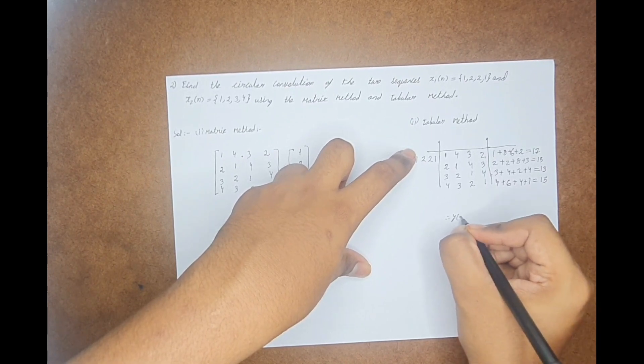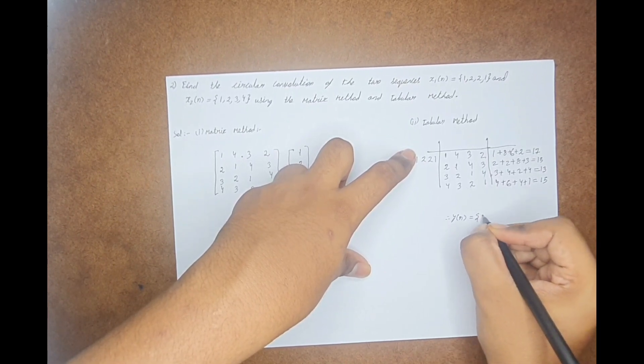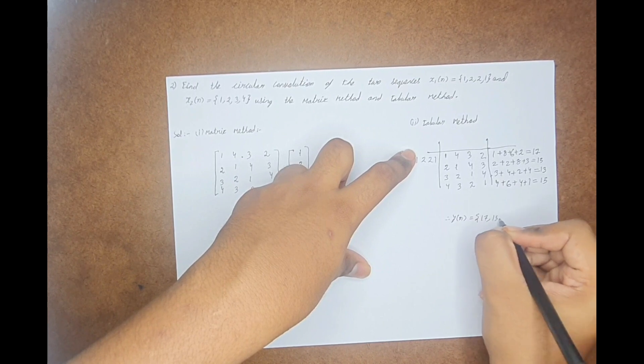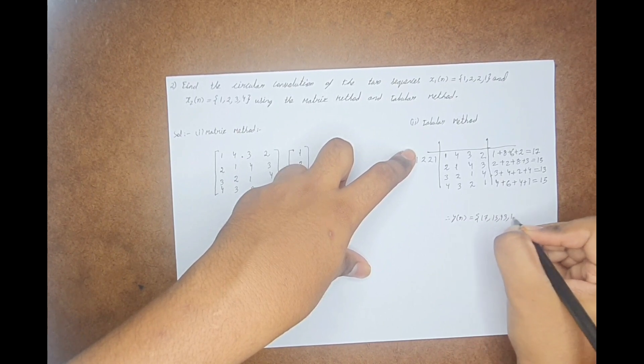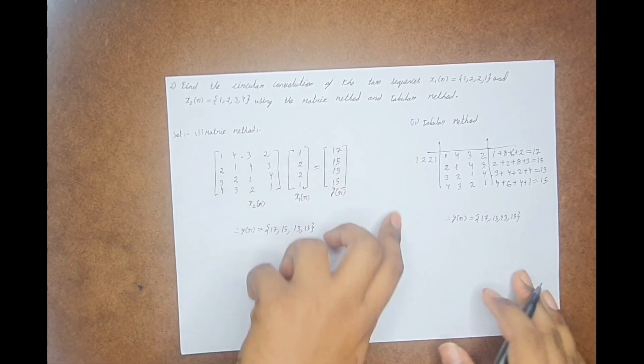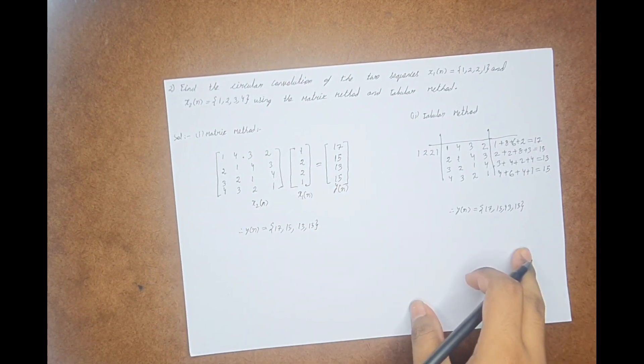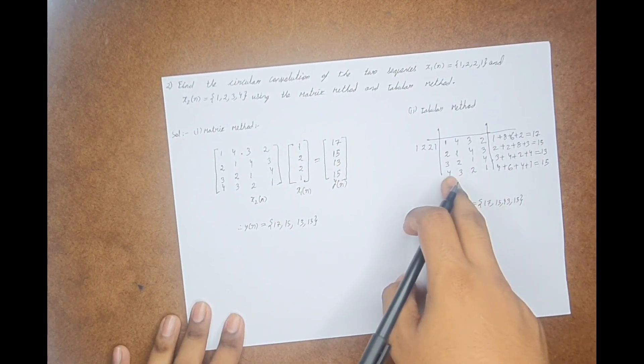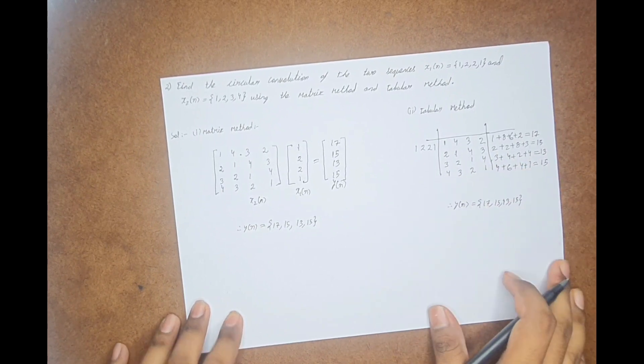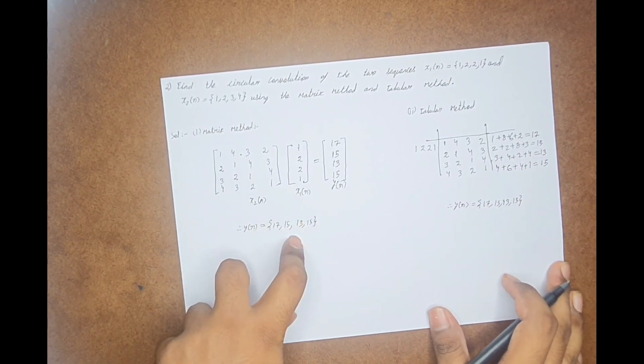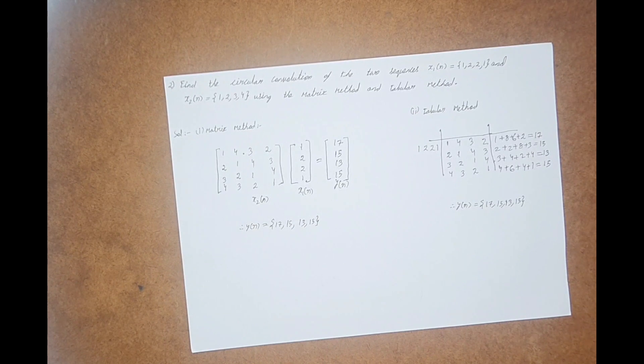So from this also, my y(n) we get the value as 17, 15, this is another 13, and this is another 15. So that's it. If you observe, both the values are the same, but the only thing is in the tabular method you are finding the answer very quickly, and in the matrix method also you are finding the answer quickly.